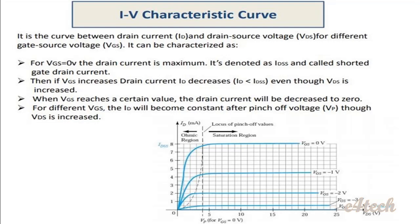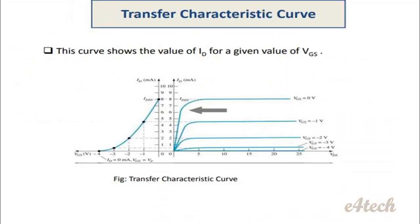For different values of VGS such as 0V, -1V, -2V, -3V, and -4V up to the pinch-off VGS, the drain current ID decreases to zero. It is the graph showing the relation between drain current and drain-source voltage for different gate-source voltages.